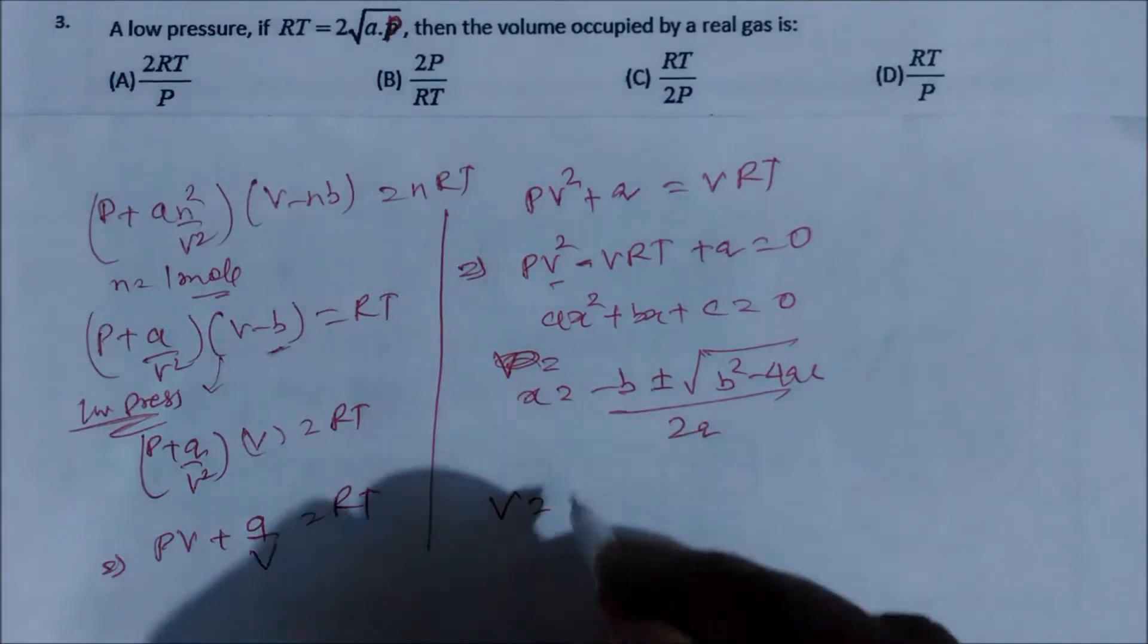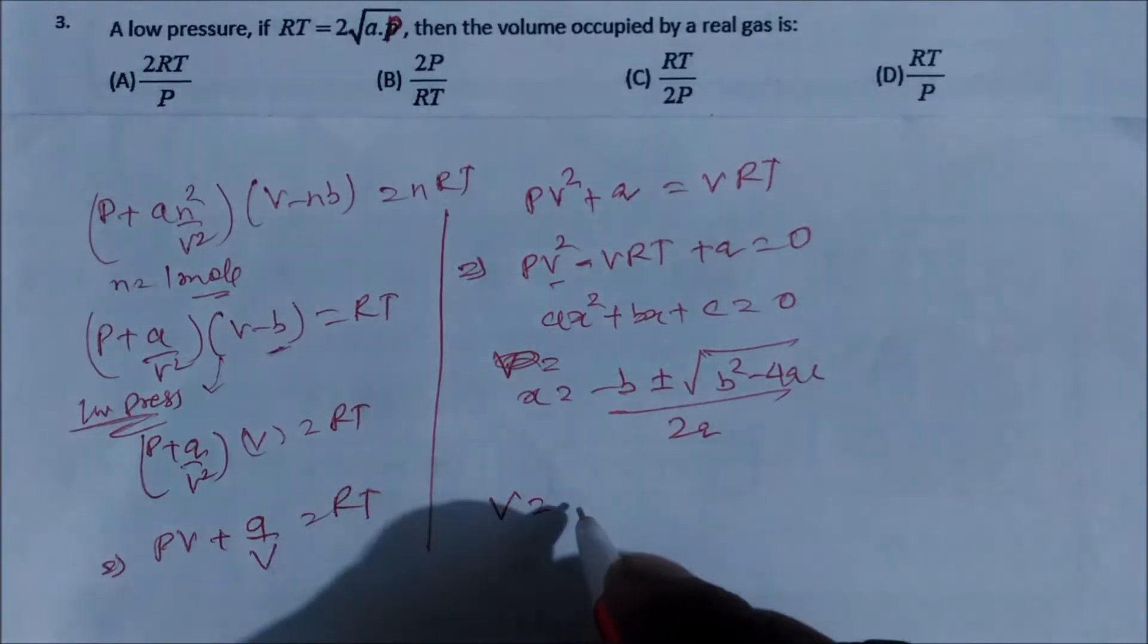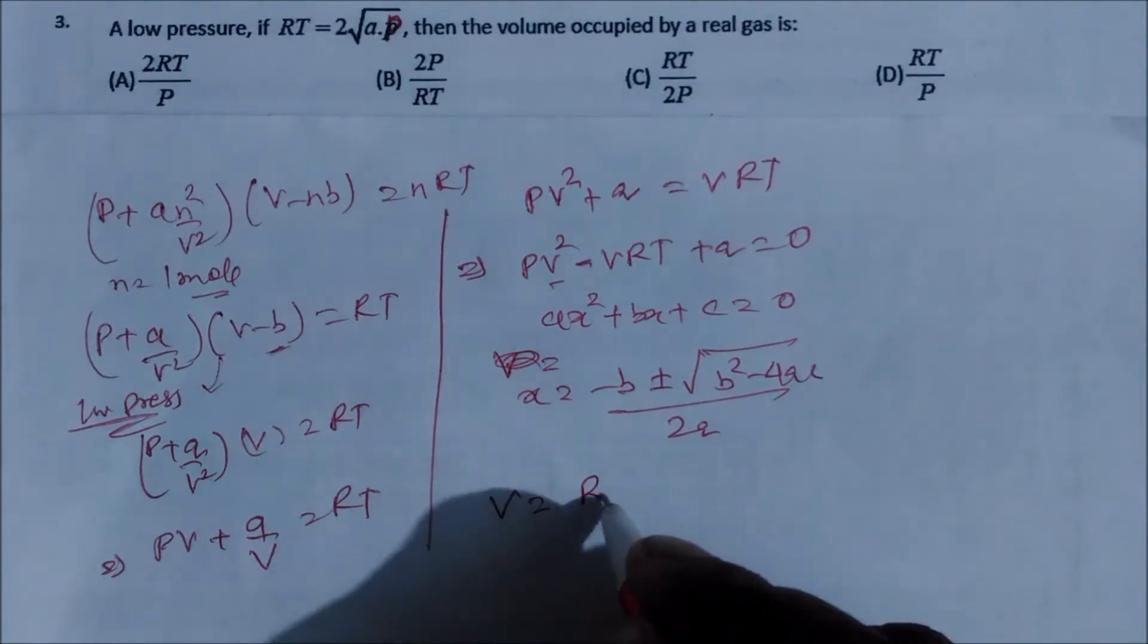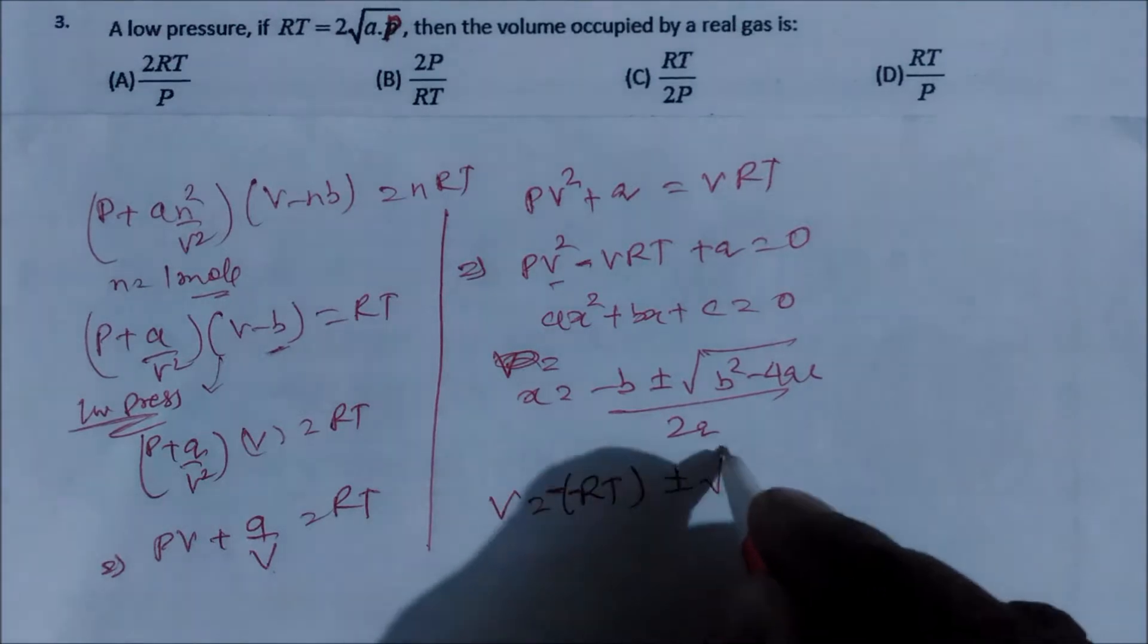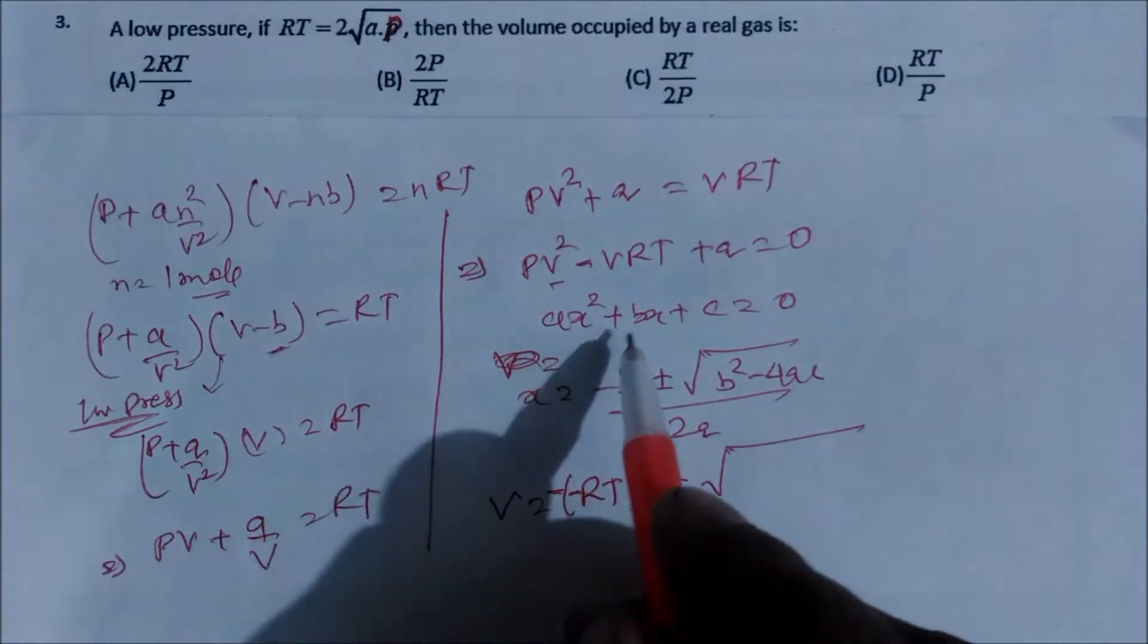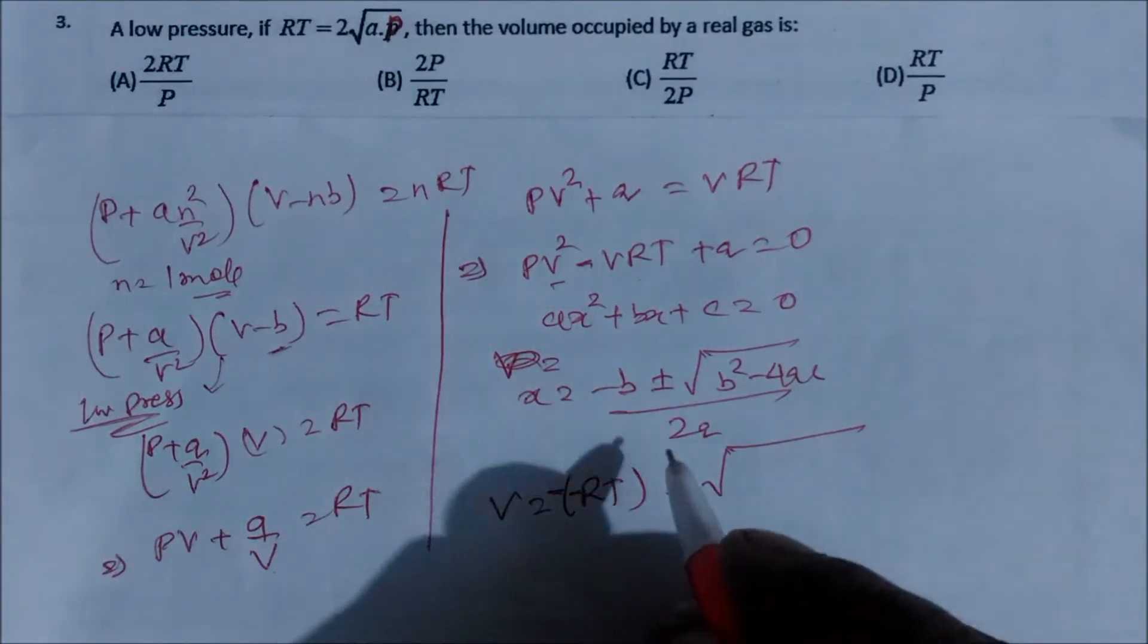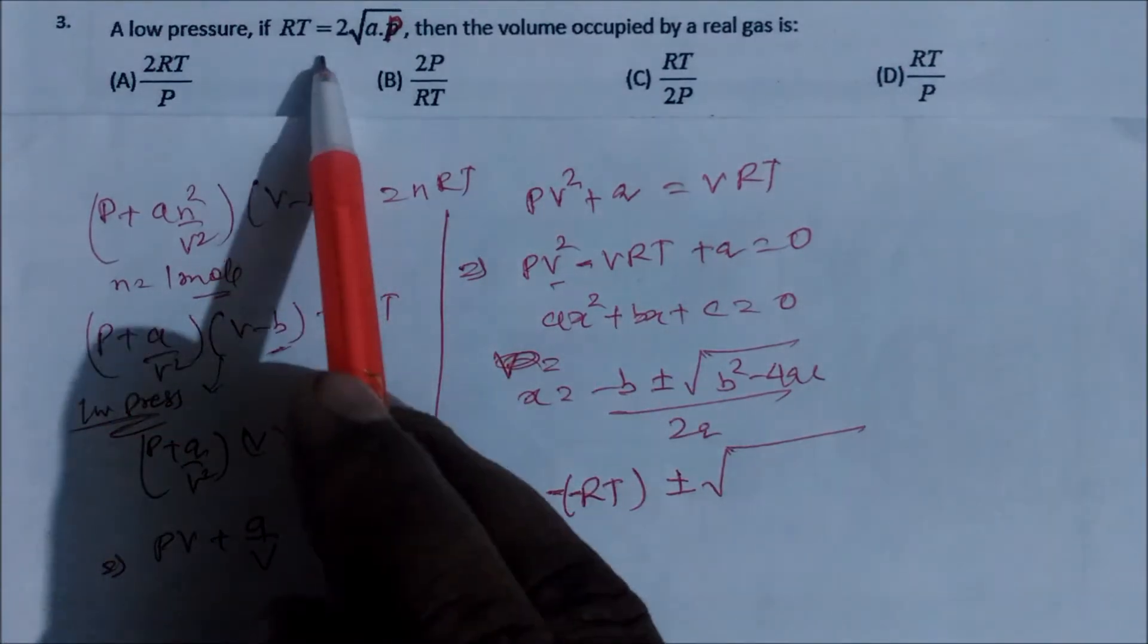So we can put V. So V will be your how much? It is minus RT, so minus minus becomes your RT plus minus, and then minus become plus, so plus minus square root of, b square is nothing, so this is RT square. So RT, if you see carefully, RT is given root 2 into ap. So RT is given here 2 into square root of a into P, right? This is given here.